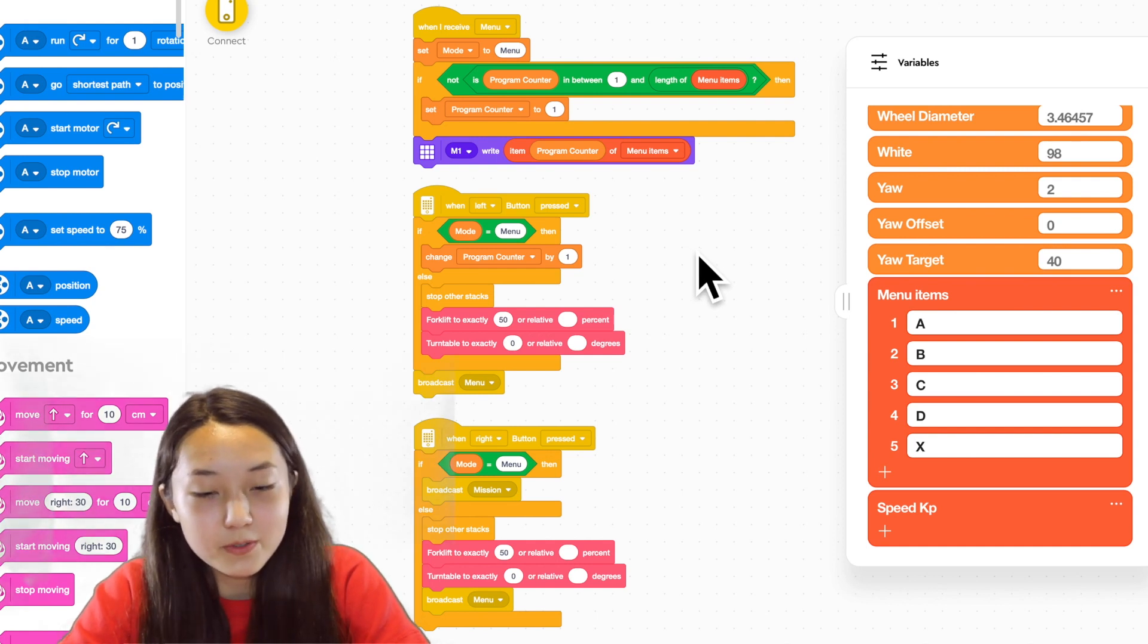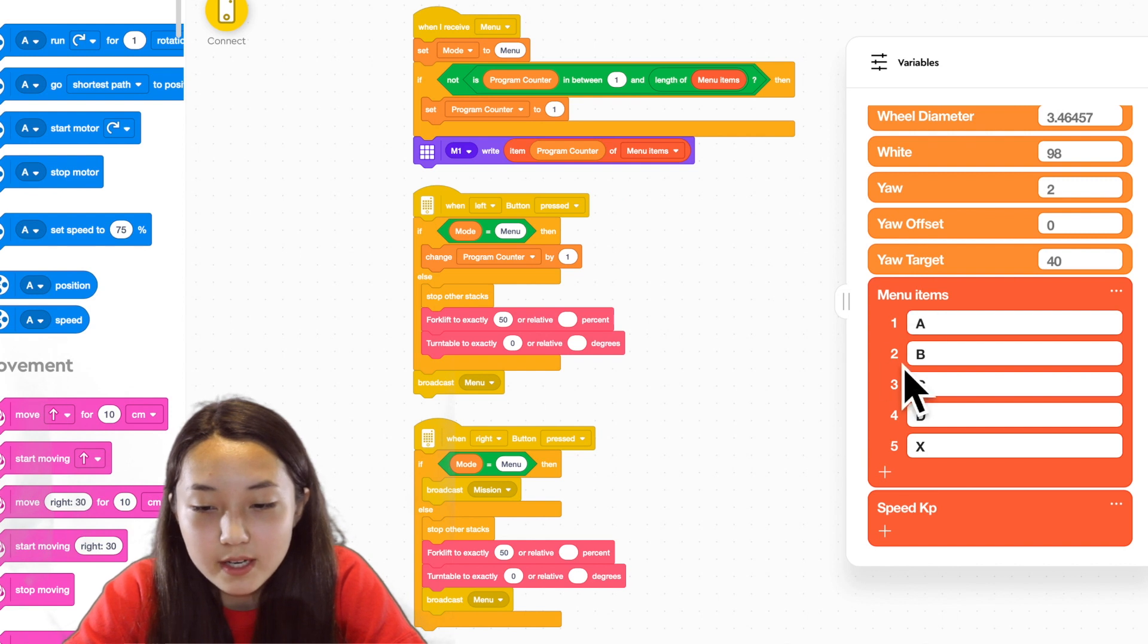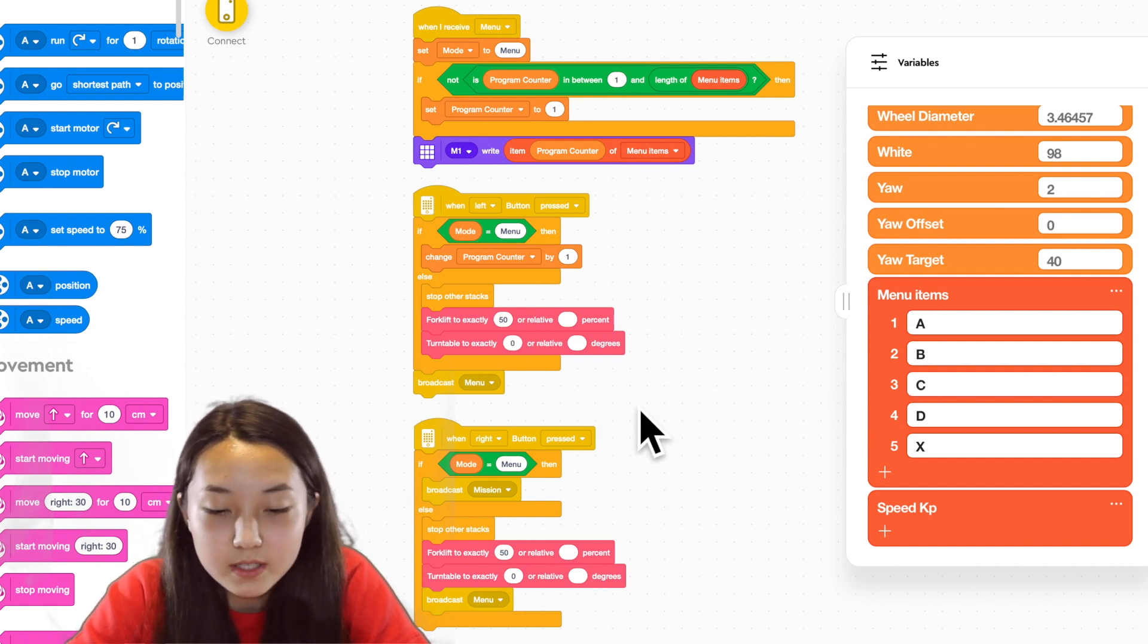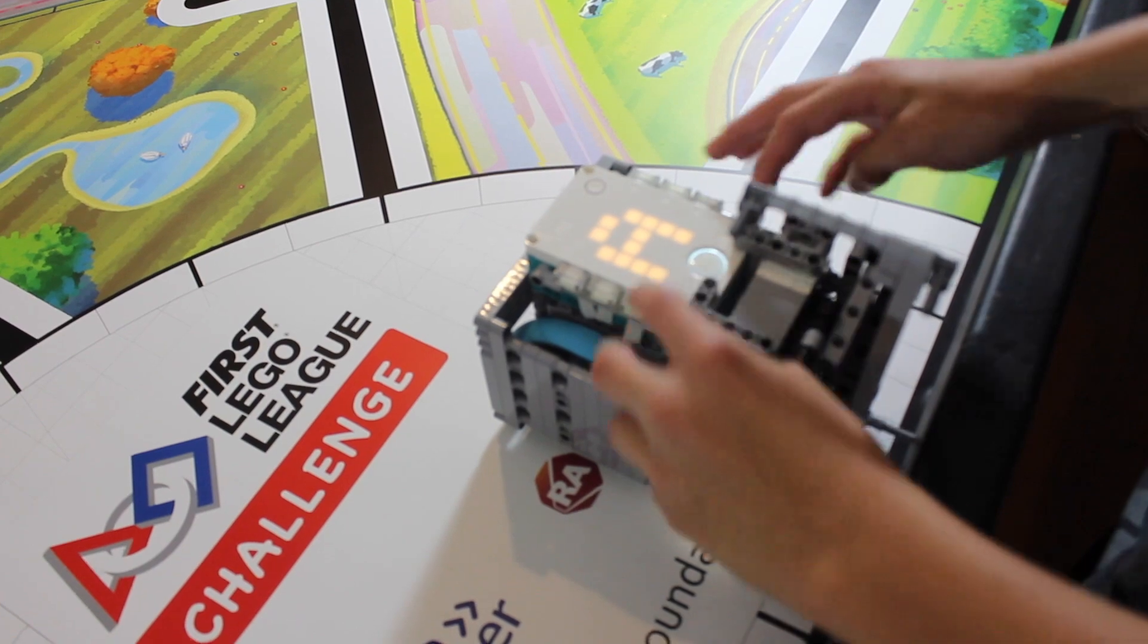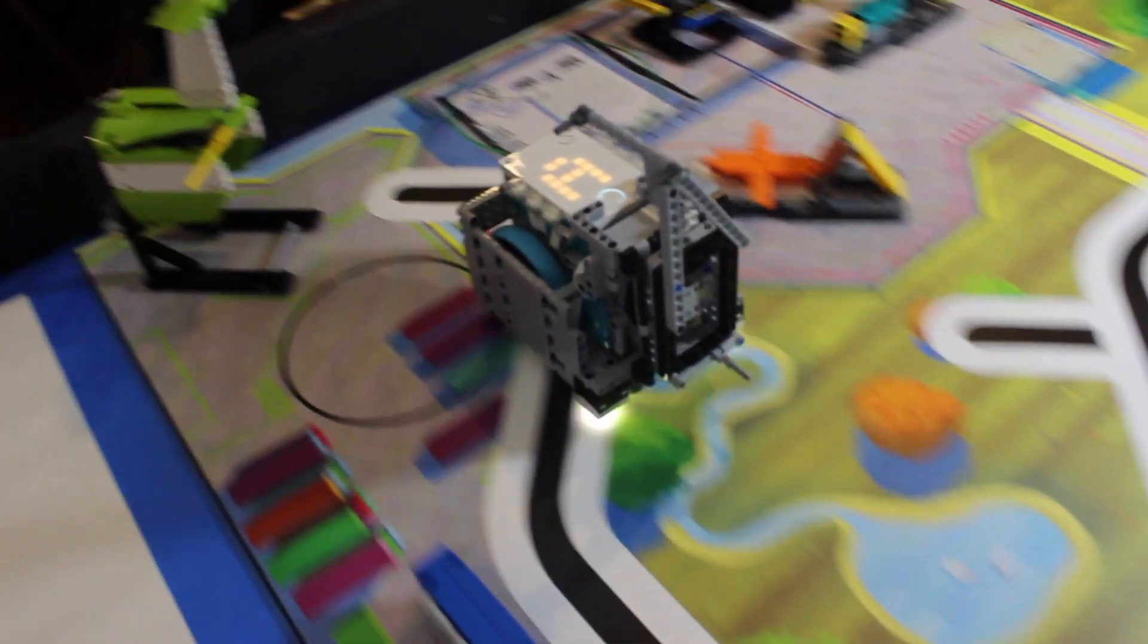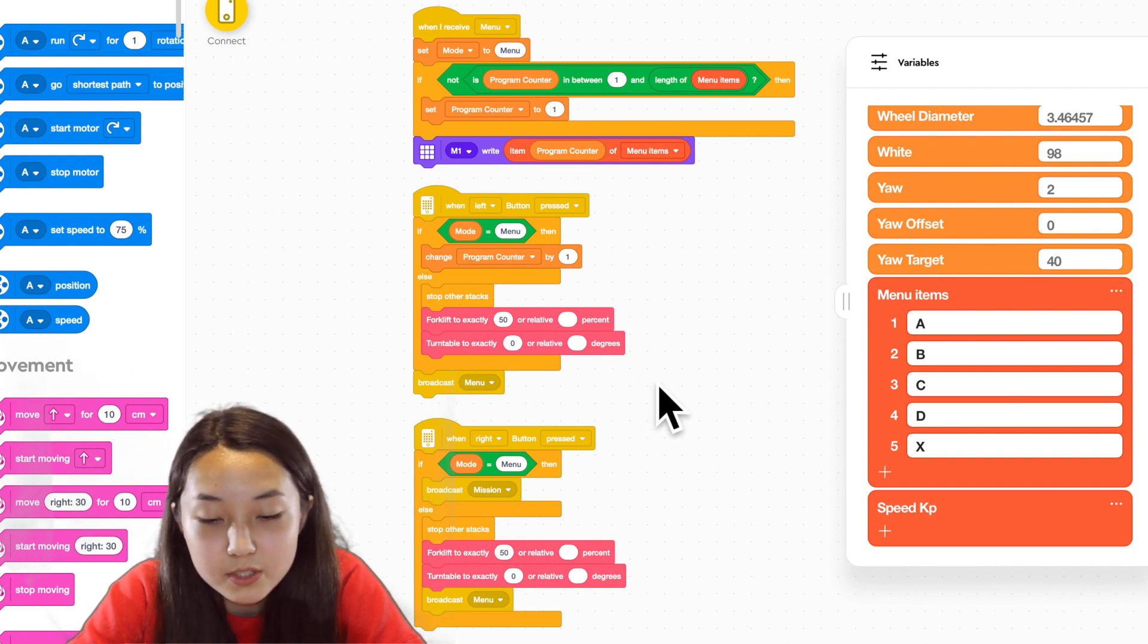We organize our program into missions and we use a menu to select them. This stack presents a menu item on the screen and these two stacks are waiting for a button to be pressed. When the left button is pressed it moves on to the next menu item and when the right button is pressed it starts a mission. If either button is pressed when it's not on the menu screen then it will abort any mission that it's on and the forklift and turntable will reset.